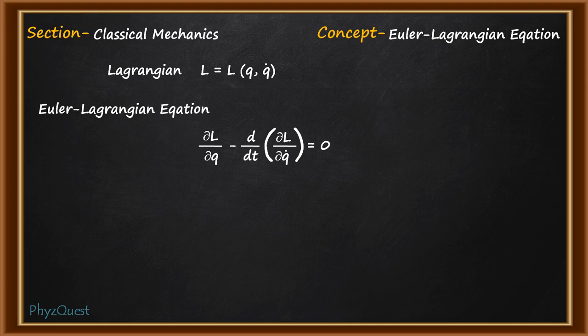Now in this question we are given a Lagrangian which is a function of position and its first order derivative. Four options are given. The question is which of the term if you add to the Lagrangian will not change its equation of motion.